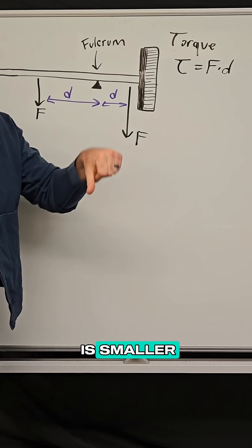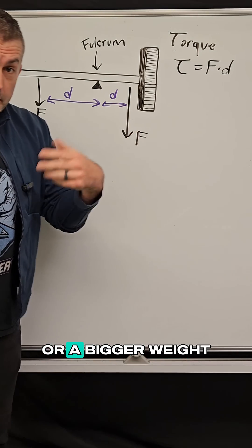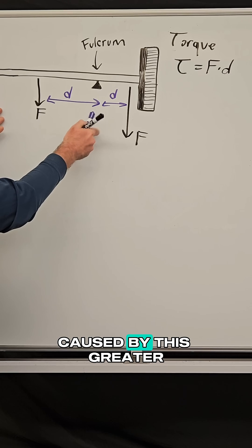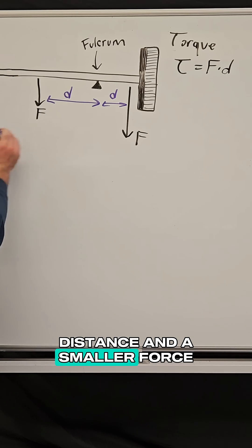And because this distance is smaller, you need a much bigger force or a bigger weight in order to balance out the torque caused by this greater distance and a smaller force.